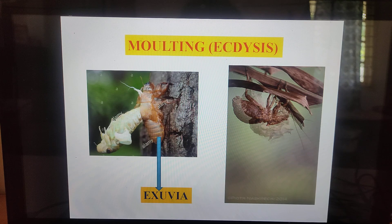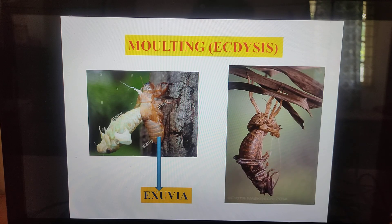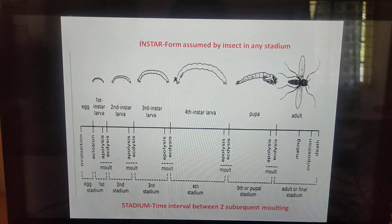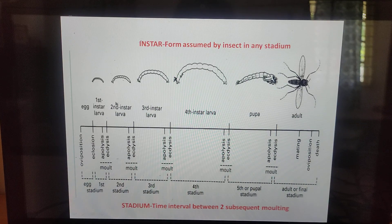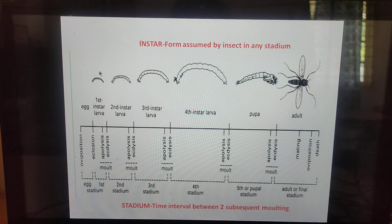Molting occurs many times in an insect during the immature stages before attaining adulthood. From the egg, a larva comes out; the larva transforms into a pupa, and the pupa into an adult. In the larva, four instars are present: first, second, third, and fourth instar. For transformation from first instar to second instar, molting has to take place.